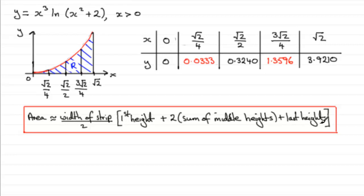I've written this formula in words because I generally find that it's a lot easier to work with. So we've got our table of values up here and so therefore that area. The area R is going to be approximately equal to half the width of a strip. So put half down.